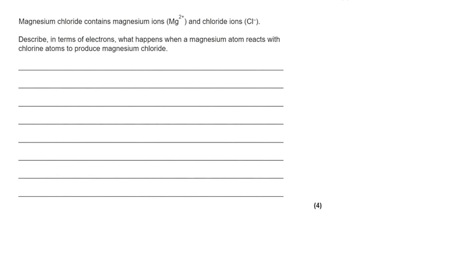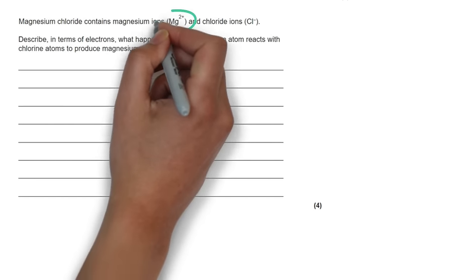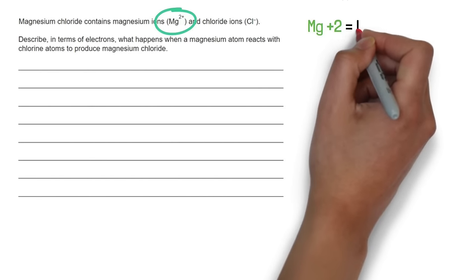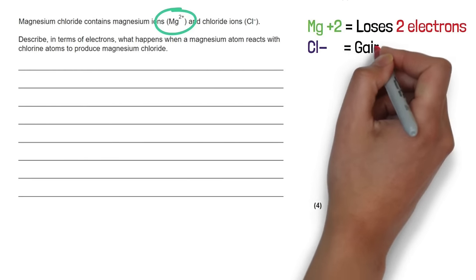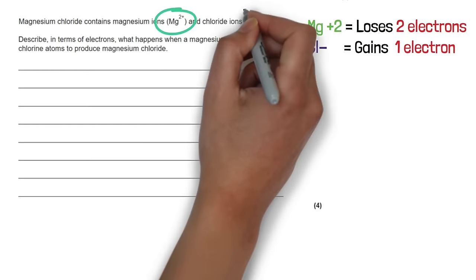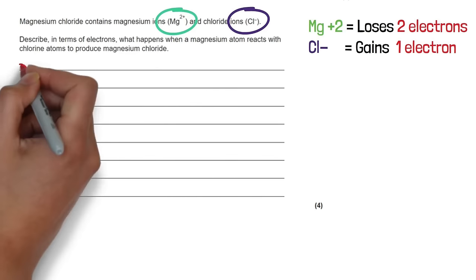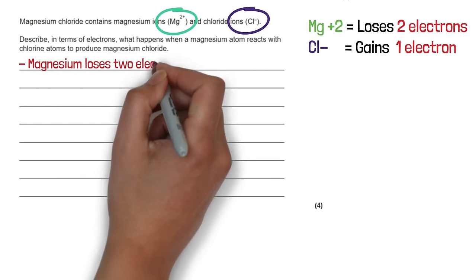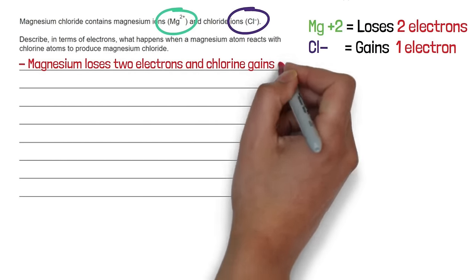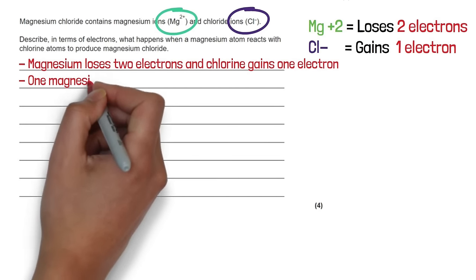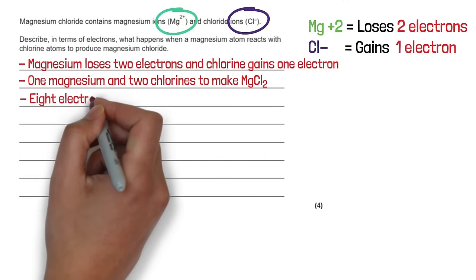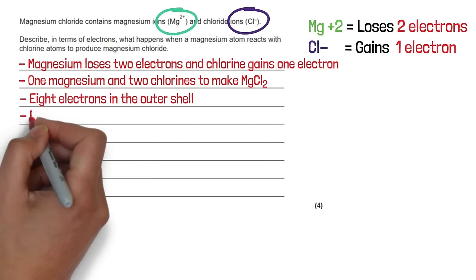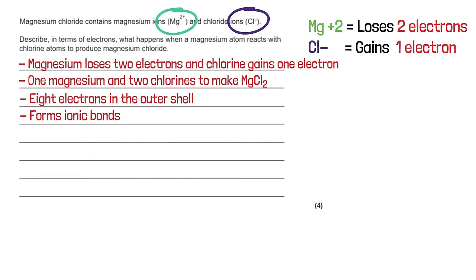Describe in terms of electrons what happens when magnesium reacts with chlorine to produce magnesium chloride. A magnesium ion has a charge of +2, so it must have lost 2 electrons. A chloride ion has a charge of -1, meaning it gained 1 electron. Since magnesium loses 2 electrons, we need 2 chlorine atoms to each gain 1 electron. So 1 magnesium and 2 chlorines form magnesium chloride, with 8 electrons in the outer shell of all atoms — this is ionic bonding.